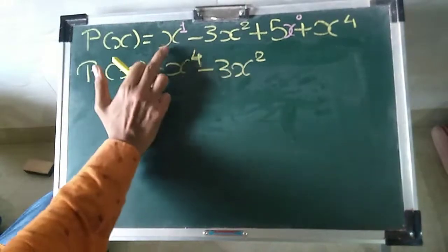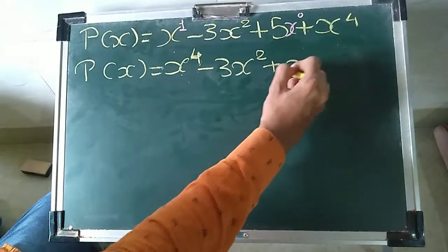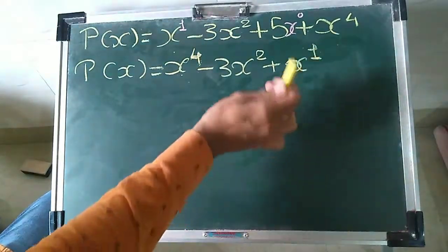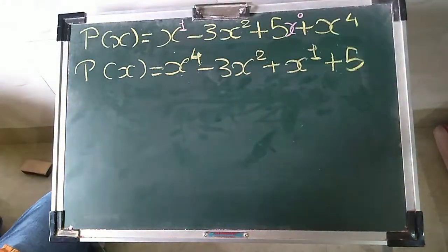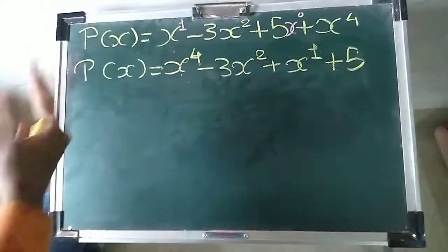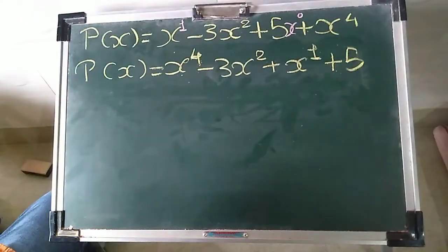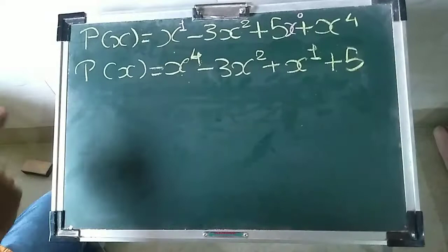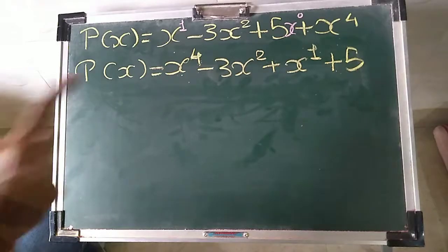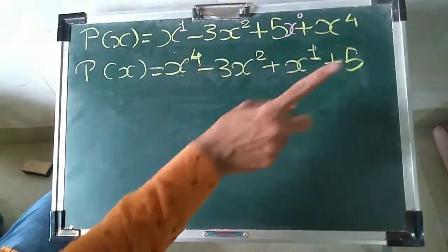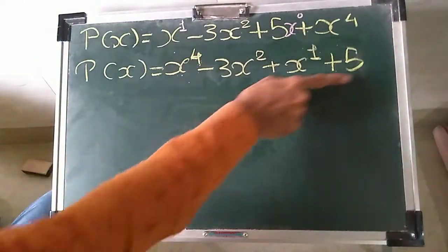After x squared, the next highest power is x raised to 1, so I write that term. Nothing else is written, so there is a plus sign: x raised to 1. The last remaining term is plus 5. Since addition and subtraction are commutative, we can rearrange terms and the polynomial remains the same. What we have done is rearranged the terms in descending order of their powers: 4, then 2, then 1, then 0. This form is known as the standard form of a polynomial.